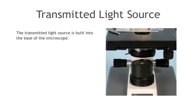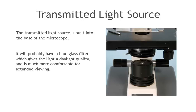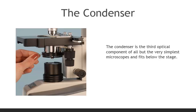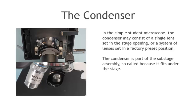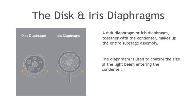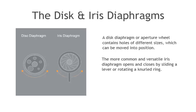Let's follow the path of transmitted light rays through a typical student microscope, discussing the function of each component in turn. The transmitted light source is built into the base of the microscope. It will probably have a blue glass filter, which gives the light a daylight quality and is much more comfortable for extended viewing. The condenser is the third optical component of all but the very simplest microscopes, and fits below the stage. In the simple student microscope, the condenser may consist of a single lens set in the stage opening or a system of lenses set in a factory pre-set position. The condenser is part of the substage assembly, so called because it fits under the stage. A disc diaphragm or iris diaphragm, together with the condenser, make up the entire substage assembly. The diaphragm is used to control the size of the light beam entering the condenser. A disc diaphragm or aperture wheel contains holes of different sizes, which can be moved into position.